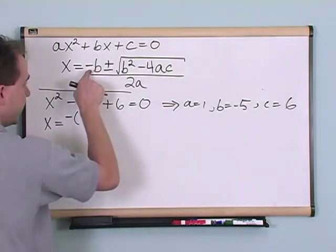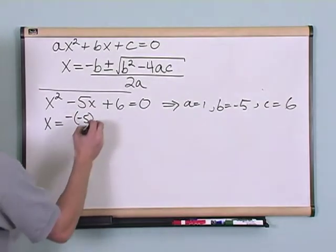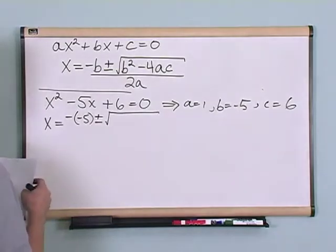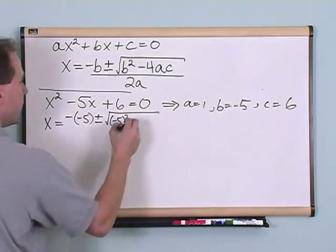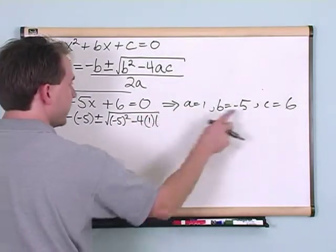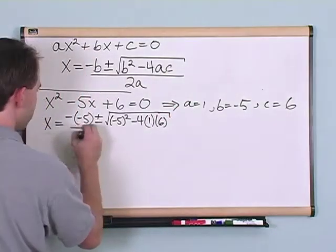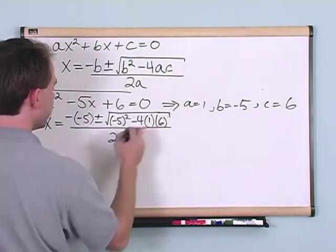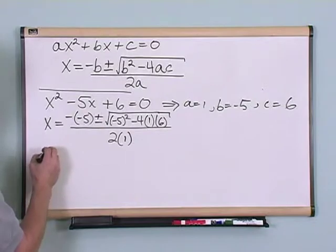Negative b, b is negative 5, so I'll put a negative 5 in here, negative b, plus or minus the square root of b squared, minus 4 times a, which is 1, times c, which is 6, all over 2 times a, which is 1, okay? So all we got to do is just crank through this.